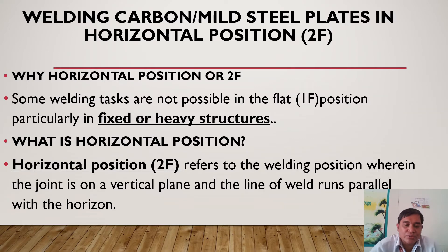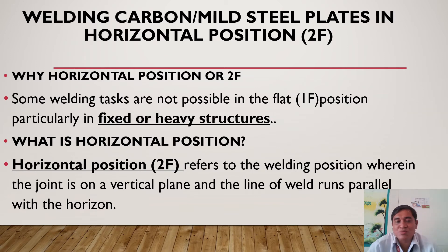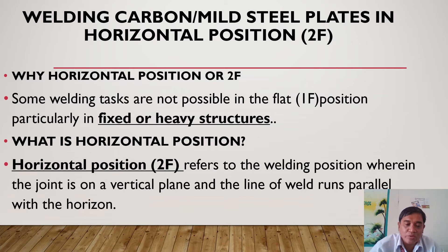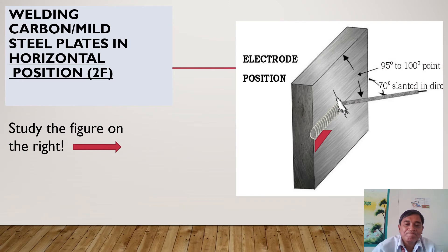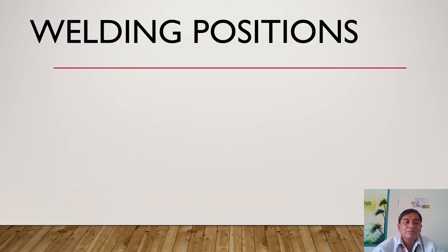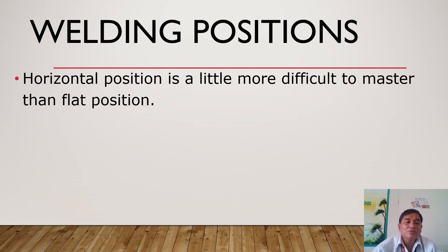The symbol for horizontal position is 2F. We use horizontal position because some welding cases are not possible in the flat position, particularly in fixed or heavy structures. Horizontal position is the welding position wherein the joint is on a vertical plane and the line of weld runs parallel to the horizon. As seen in the figure, that is the electrode in horizontal position. The horizontal position is a little more difficult to master than the flat position.